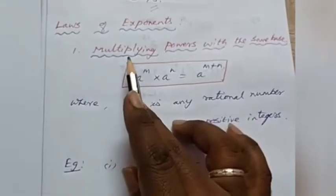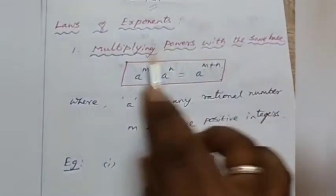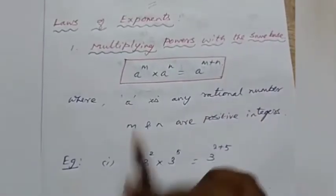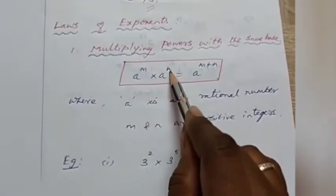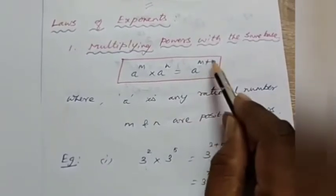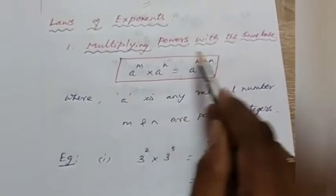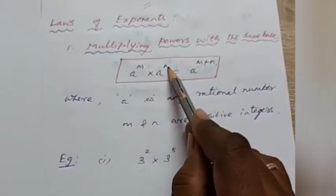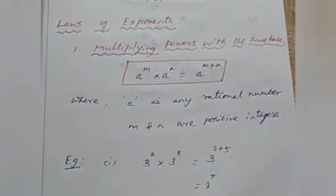The first law is multiplying powers with the same base. The formula is: a power m into a power n is equal to a power m plus n. When the bases are the same, add the powers.